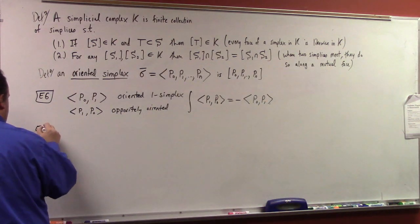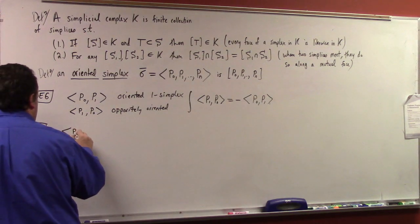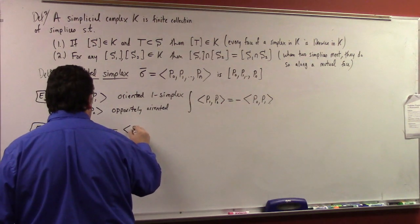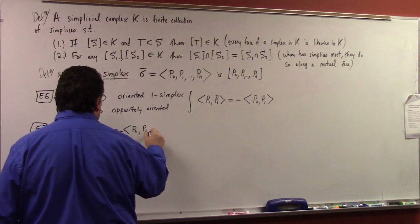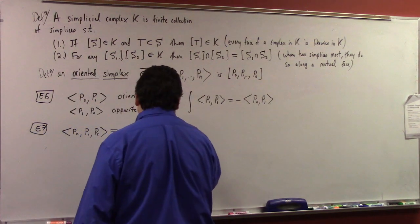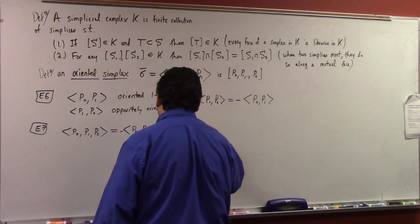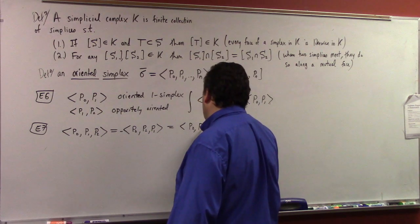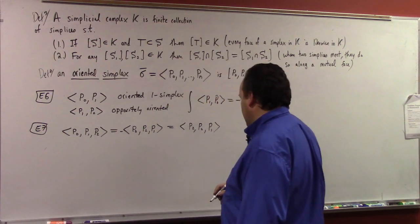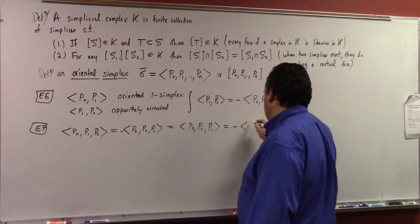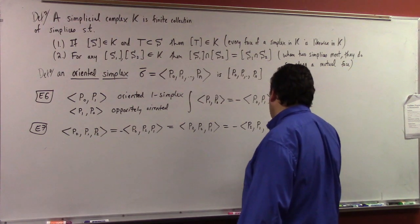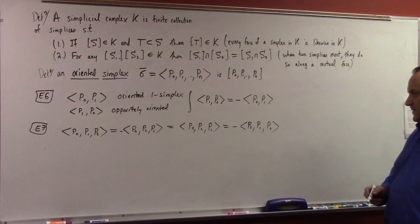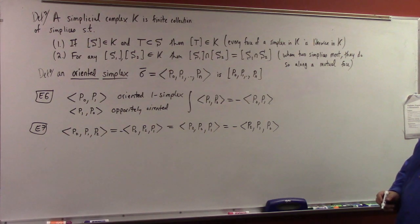And if I had a two-simplex, the way this works is I could have P0, P1, P2, and that would be minus P0, P2, P1, which would be equal to P2, P0, P1, which would be minus P2, P1, P0. There are six different permutations altogether.